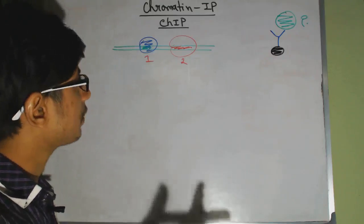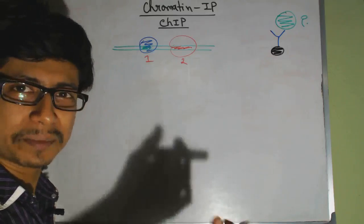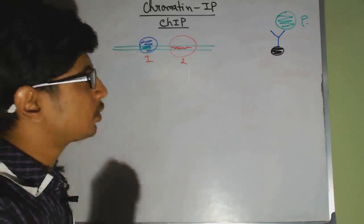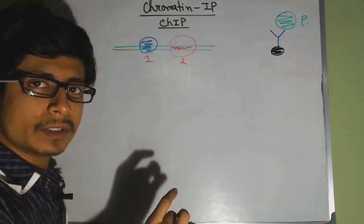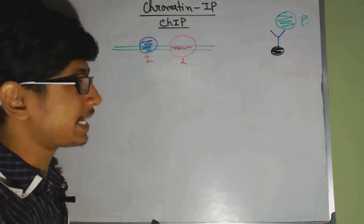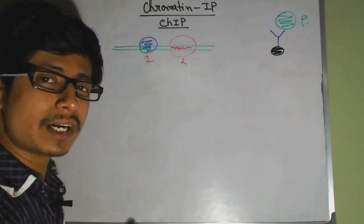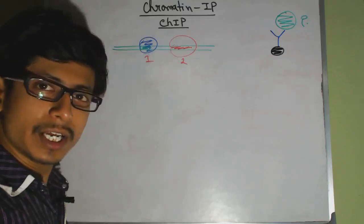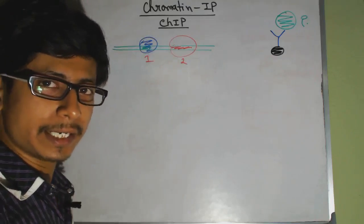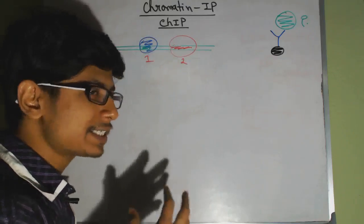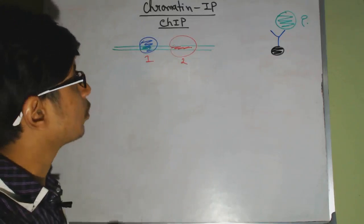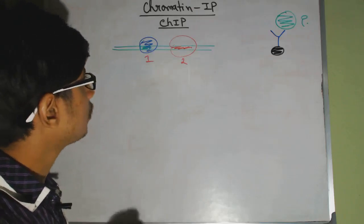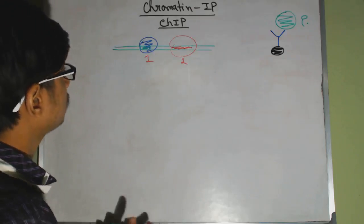These two proteins bind two different regions of the chromatin — because DNA is present in the chromatin. Now we want to know where exactly protein one binds and where exactly protein two binds: what sequence is present at each location. We want to know the exact sequence that each protein binds to in order to understand that protein-DNA interaction.